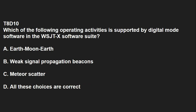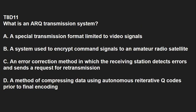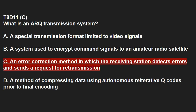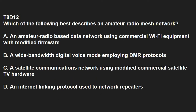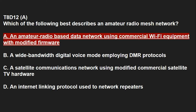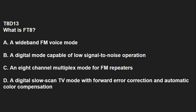T8D10: Which of the following operating activities is supported by digital mode software in the WSJT-X software suite? Earth-Moon-Earth, weak signal propagation beacons, and meteor scatter — all of the above. T8D11: What is an ARQ transmission system? An error correction method in which the receiving station detects errors and sends the request for retransmission. T8D12: Which of the following best describes an amateur radio mesh network? An amateur radio-based data network using commercial Wi-Fi equipment with modified firmware. T8D13: What is FT8? FT8 is a digital mode capable of low signal-to-noise operation.